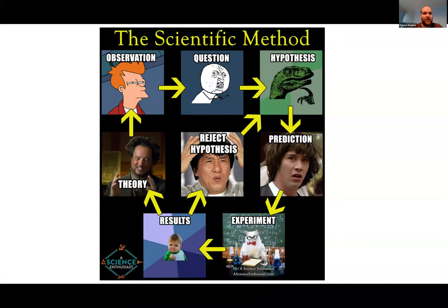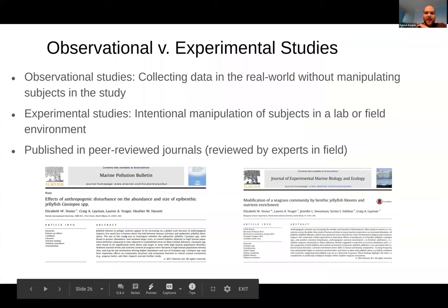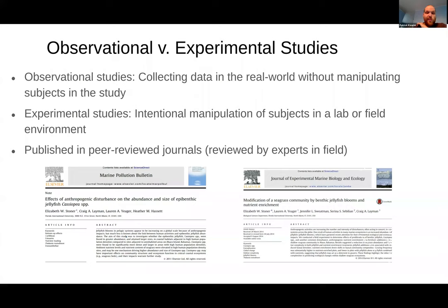The beautiful thing about science is there's always more questions to be asked — even if we find a vaccine for COVID, there'll always be more tests and ideas to answer. Science is always iterative. There are two types of science: observational, which is just collecting data on the real world without manipulating anything — like studying the natural behavior of sharks — and experimental science, where you intentionally manipulate something, either in the lab, the field, or a hospital setting. For example: studying the efficacy of an HIV drug by giving one group the drug and another a placebo.